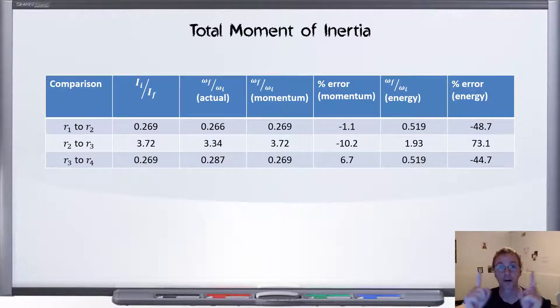In the first run of this experiment, the masses start close together and are allowed to move out, resulting in a slowing down of the system of 0.269. Compared to our estimate, we're only off by about 1 percent, which is extremely good. And then the device is sped up again by moving the masses close together. At this point, we are predicting 3.72, and we get 3.34, being now off by 10 percent, and the answer is low. Finally, the device is slowed down again by moving the masses apart, and we predict the same ratio of 0.269. And our final run is off by 6.7 percent.